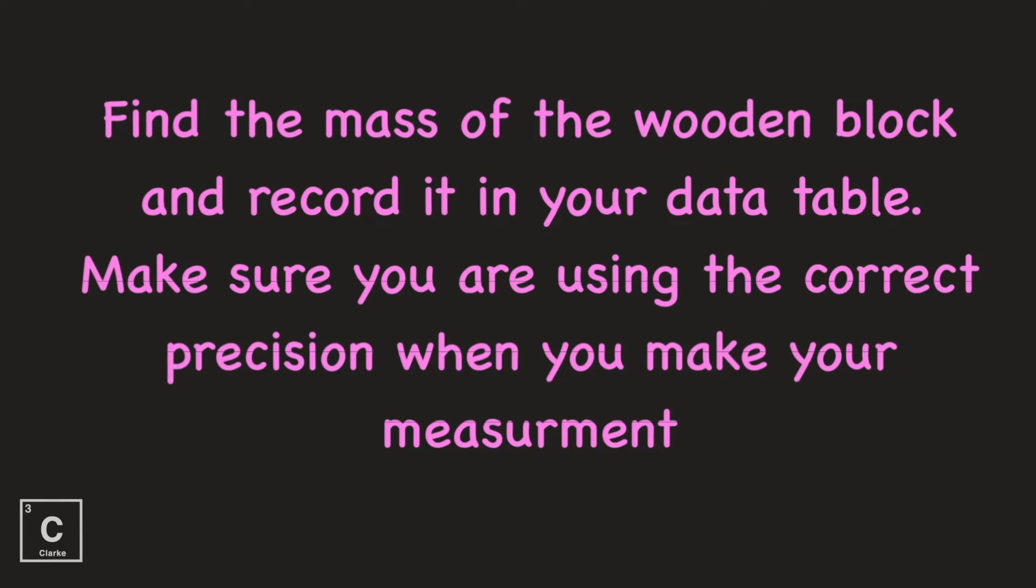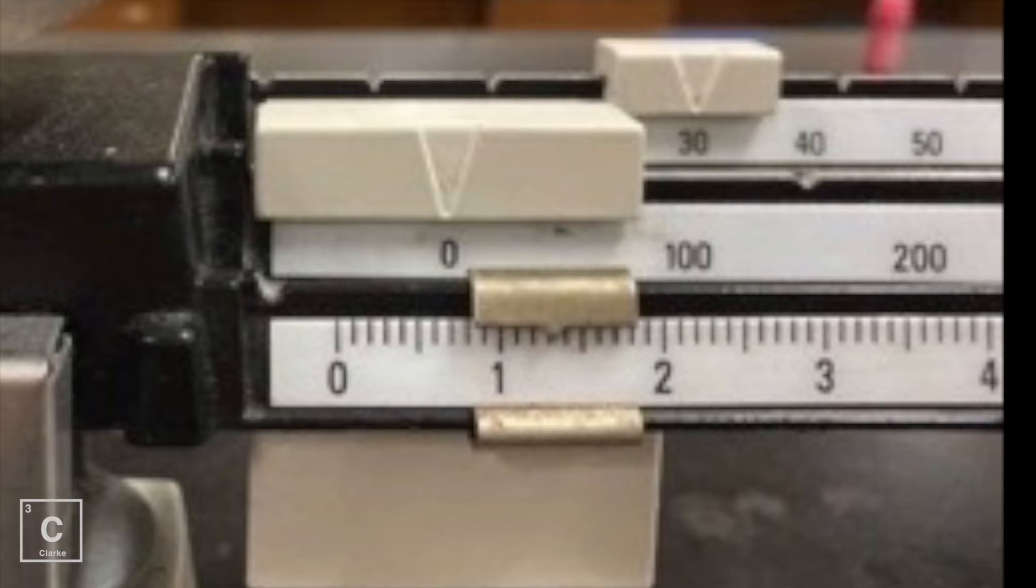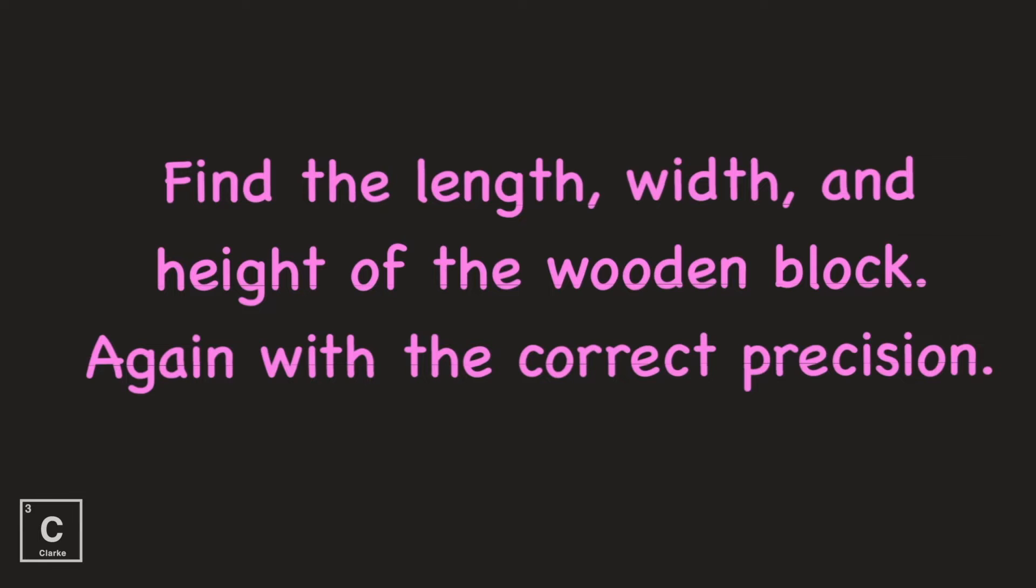Find the mass of the wooden block and record it in your data table. Make sure you're using the correct precision when you make this measurement. Find the length, width, and height of the wooden block. Again, with the correct precision.